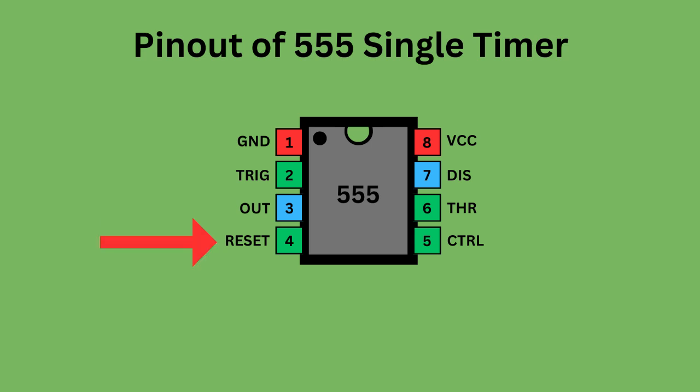Pin 4, the reset pin, is used to reset the 555 timer's internal flip-flop. Pin 5 serves as the control pin, enabling you to adjust the threshold voltage levels used by the internal comparators to set and reset the flip-flop.